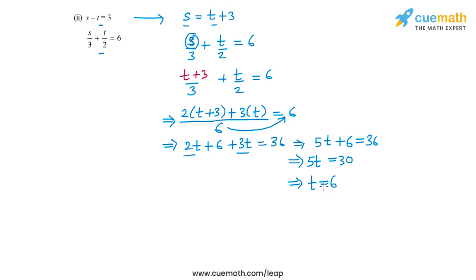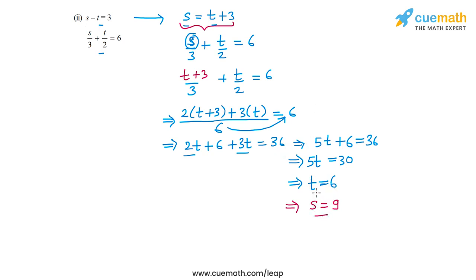We got the value of t as 6. Now we can use this value of t to find s using the equation s equal to t plus 3, which means s equal to 9. So the solution of the second pair of equations is s equal to 9 and t equal to 6.